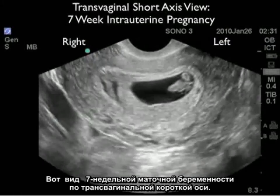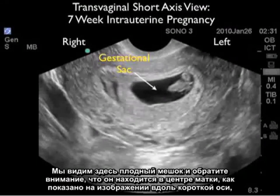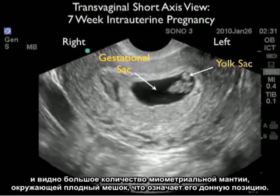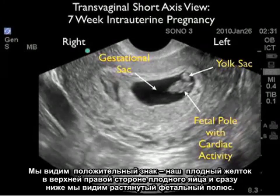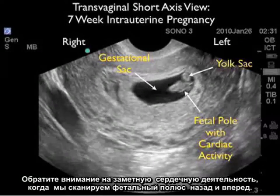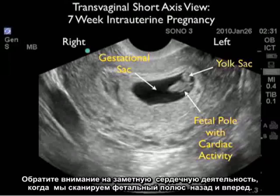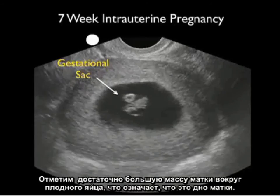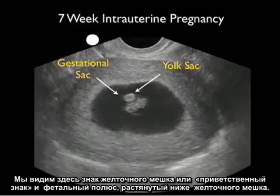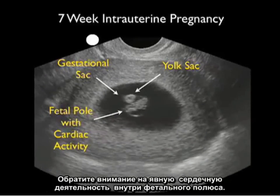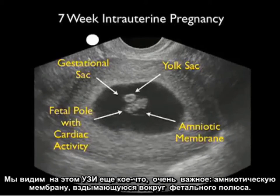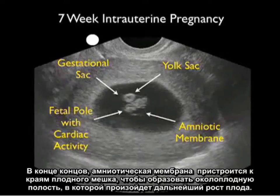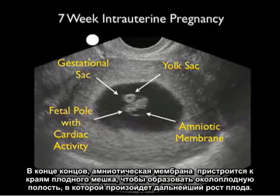Here's a transvaginal short axis view of a 7-week intrauterine pregnancy. The gestational sac is located in the center of the uterus with a good amount of myometrial mantle surrounding it, signifying a fundal location. We see the positive cheerio sign or yolk sac to the upper right aspect of the gestational sac, and just below it the fetal pole stretched out with positive cardiac activity. In another 7-week intrauterine pregnancy also in transvaginal short axis, we again note the yolk sac, fetal pole with cardiac activity, and importantly the amniotic membrane billowing out from around the fetal pole — which will eventually plaster down on the margins of the gestational sac to form the amniotic cavity.